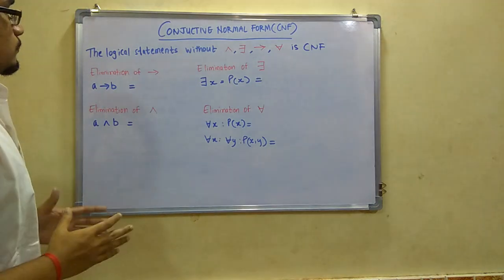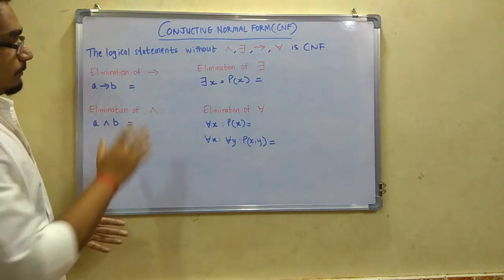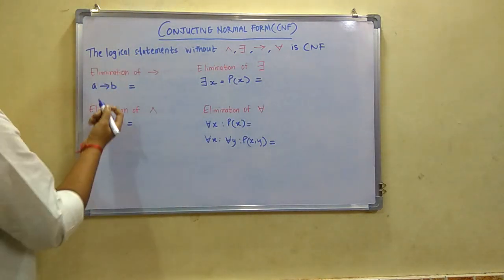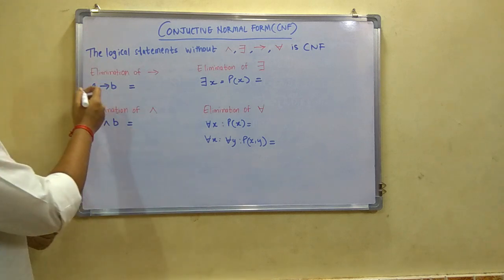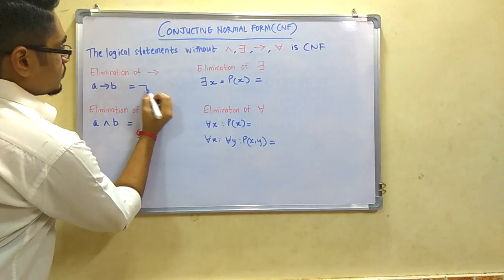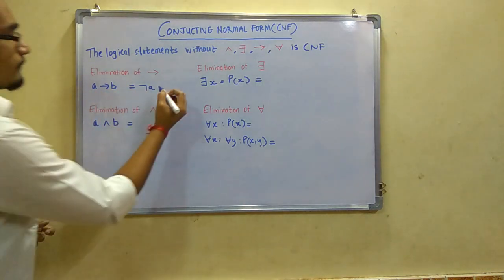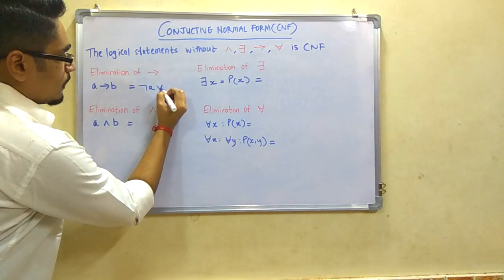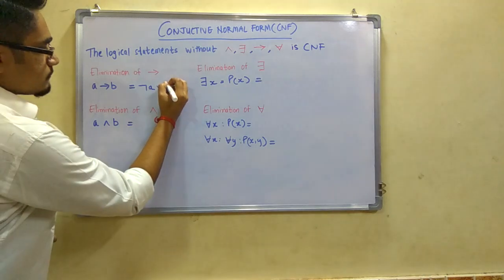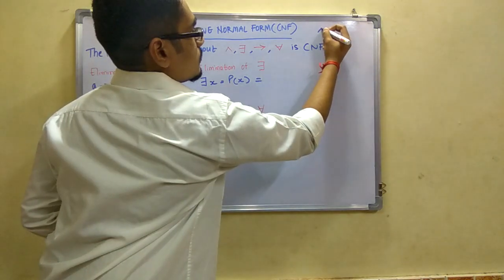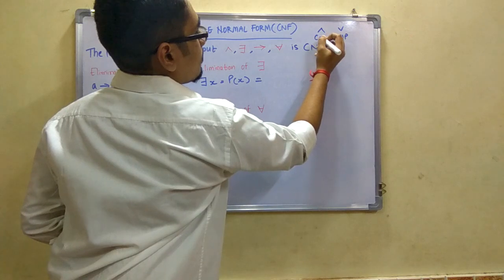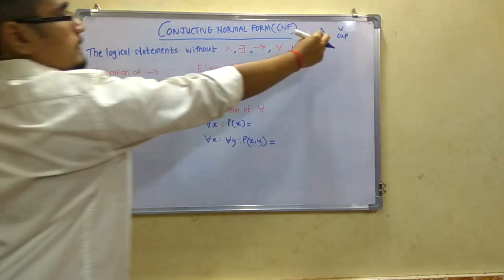First is the elimination of the arrow (→). If there is a statement like A → B, we eliminate this arrow by negating the first variable, placing an OR symbol, and writing the second variable as it is. So A → B becomes ¬A ∨ B. I refer to ∧ as 'cap' and ∨ as 'cup' to make it easier to remember when solving these problems.